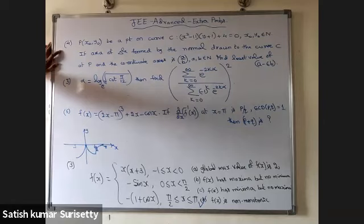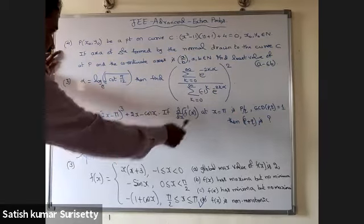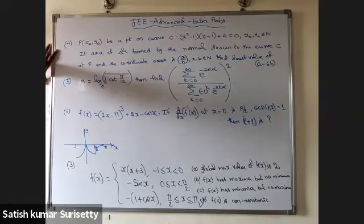Sixth problem: f(x) = (2x − π)³ + 2x^x. If the derivative of f⁻¹(x) at x = π is of the form p/q where gcd(p, q) = 1, find the value of p + q.